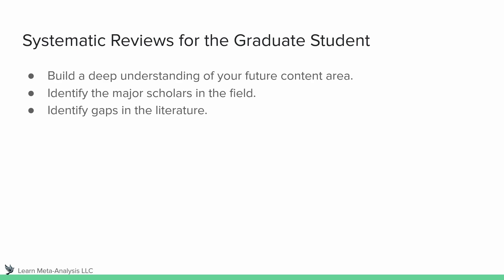They can also be very useful for identifying gaps that you find in the literature. In my opinion, this is one of the most important things for systematic reviews and meta-analyses — not just the findings, but highlighting where more research is needed is where we really see the value. You can also identify what areas are saturated with findings. By doing a systematic review, you'll be able to identify what areas already have tons of research and really help you identify the gap that you want to address with your own research.